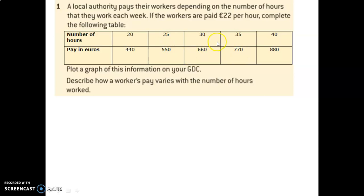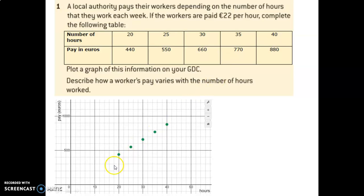So that is our table. Now, put this on a calculator or in Desmos, as I have here, and let's take a look at what it means. I put that data in Desmos, and I can see hours are here and here is the pay in euros. You can see the data lines up perfectly as a linear equation.